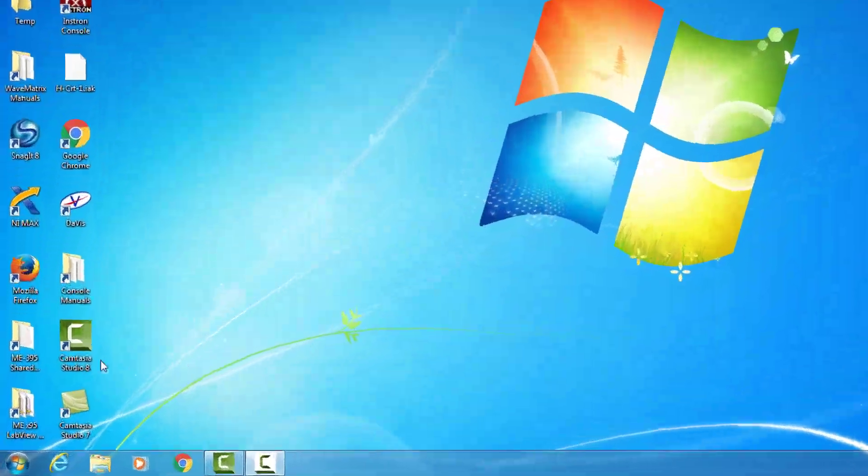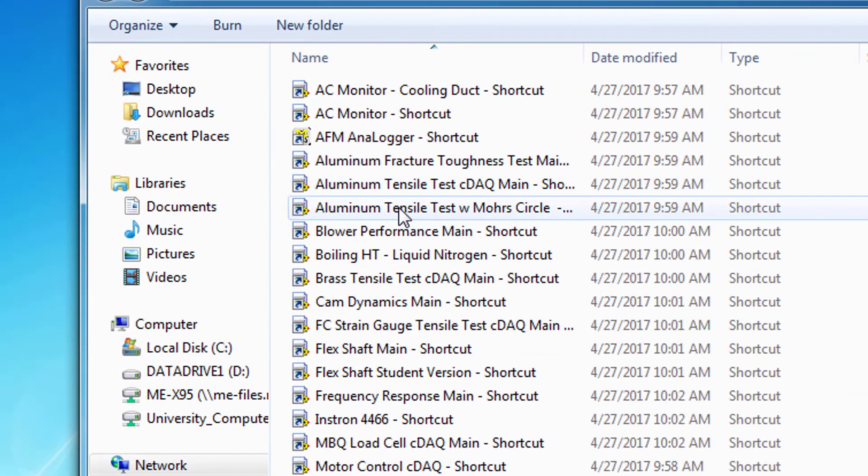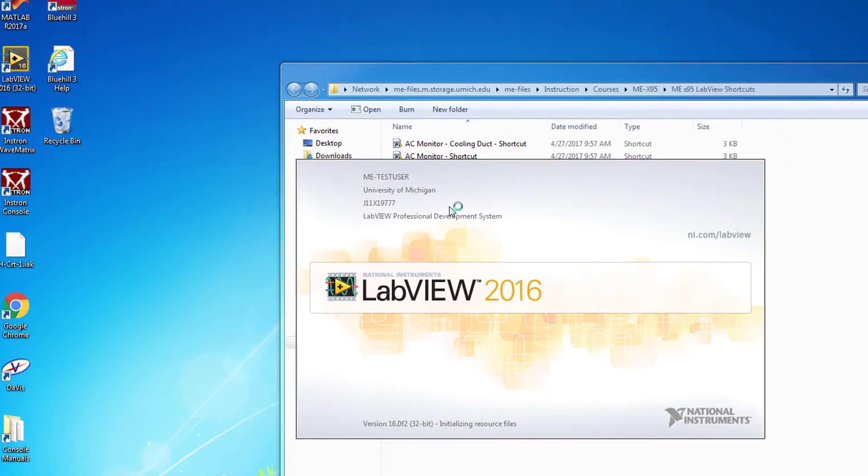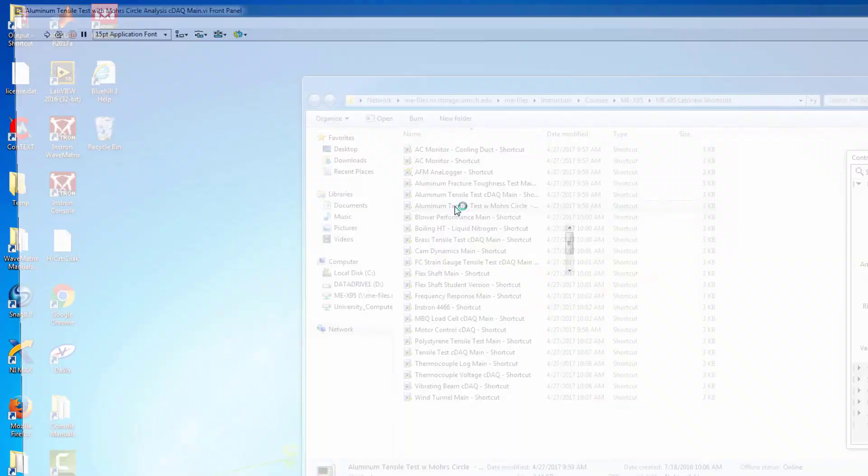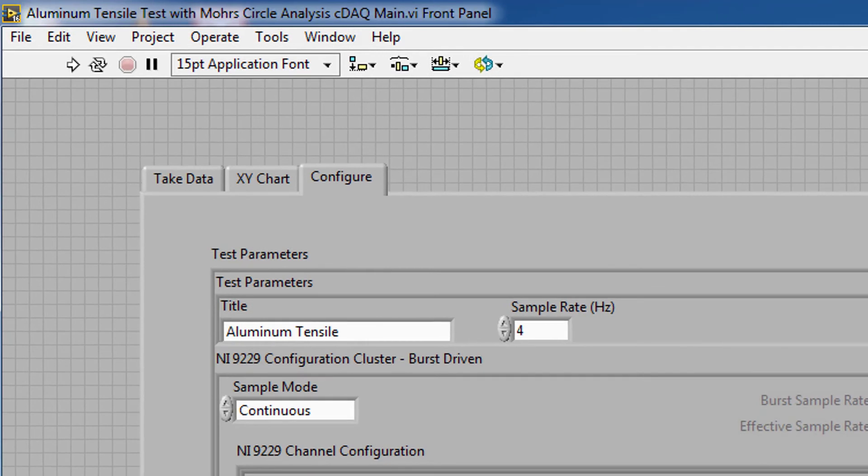On your desktop, open the X95 shortcut folder and select Aluminum Tensile Test with Mohr Circle. Once the program opens, navigate to the Configuration tab. The title and sampling frequency may be edited but the defaults should be sufficient.